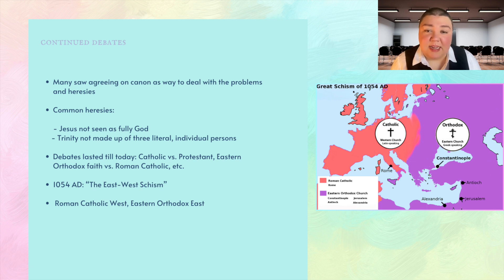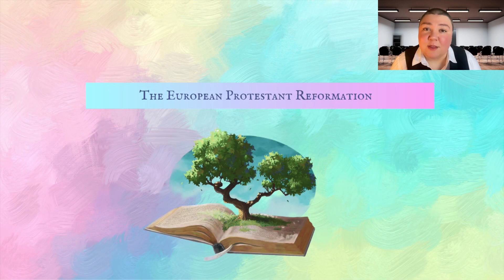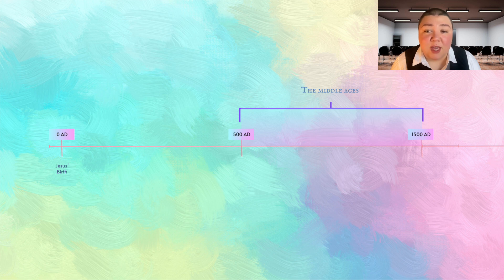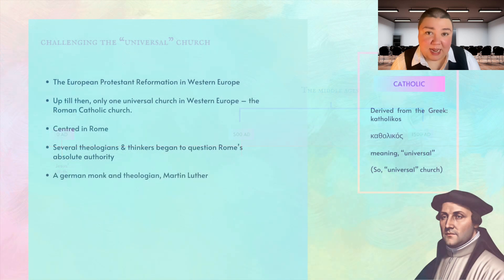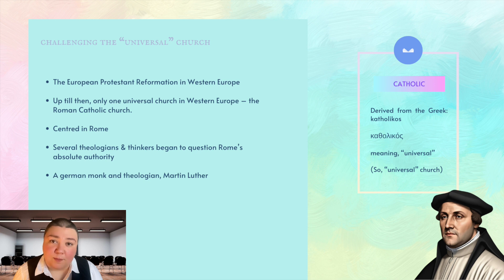Theological divisions led to the splitting of the East and Western European Church — in 1054 we have what is called the East-West Schism, the separation of Western and Eastern Christianity. We end up with the Roman Catholic Church in the West and the Eastern Orthodox faiths in the East. Let's now jump forward into the Middle Ages — the 14th and 1500s — when the events of the European Protestant Reformation take place in Western Europe. Up till this time, there was generally only considered to be one universal Church in Western Europe, namely the Roman Catholic Church, with its epicentre, authority, and power lying in Rome.